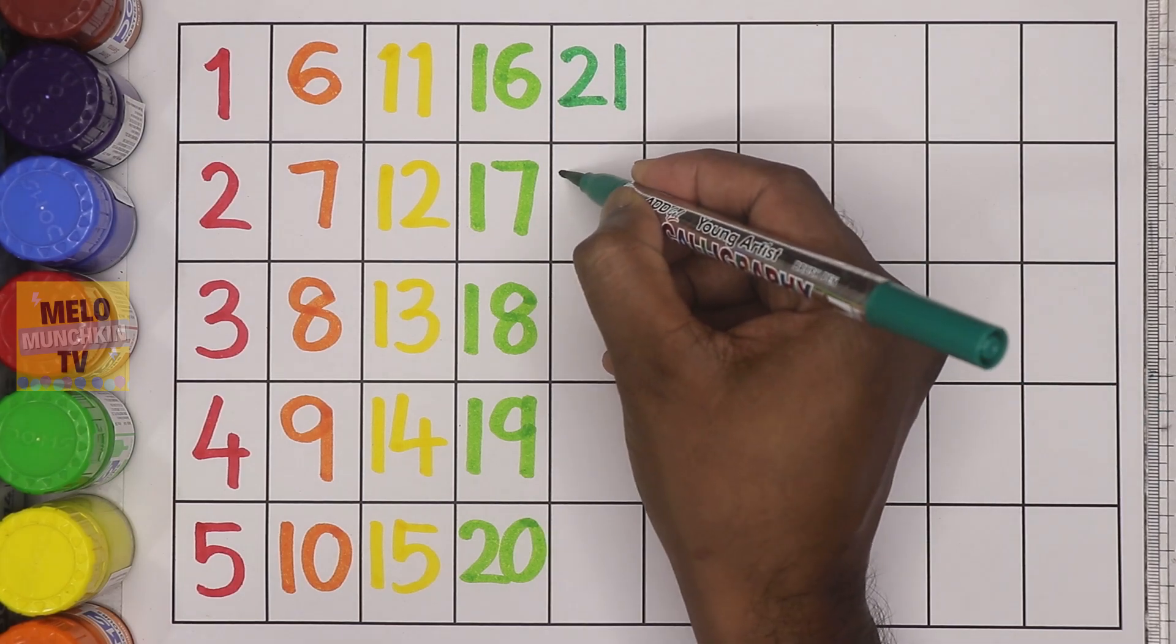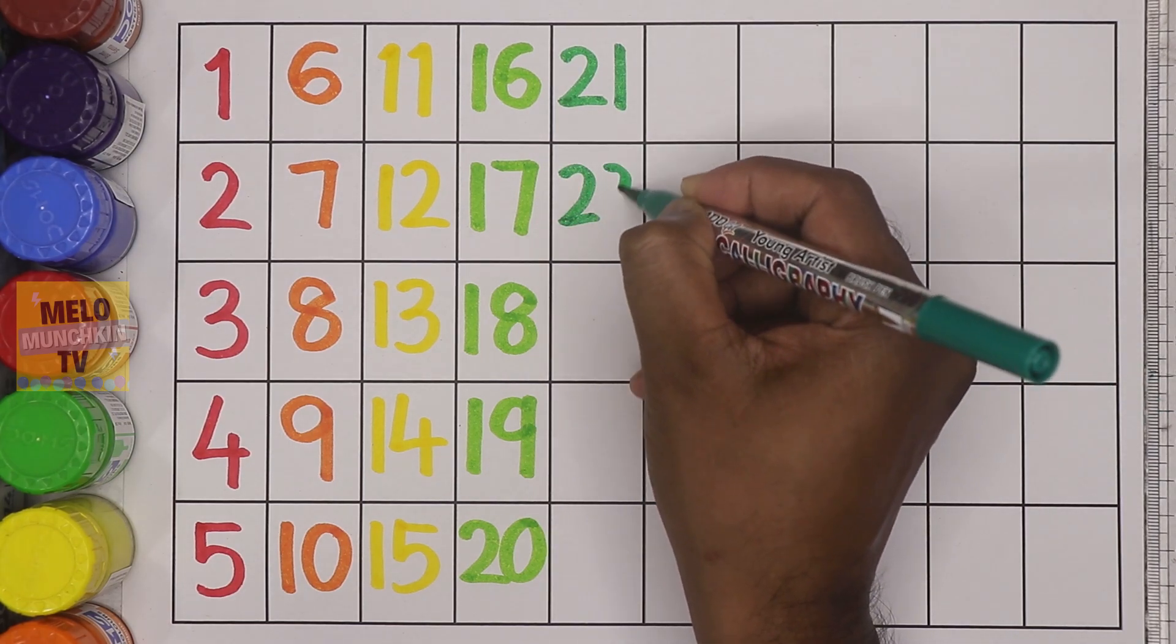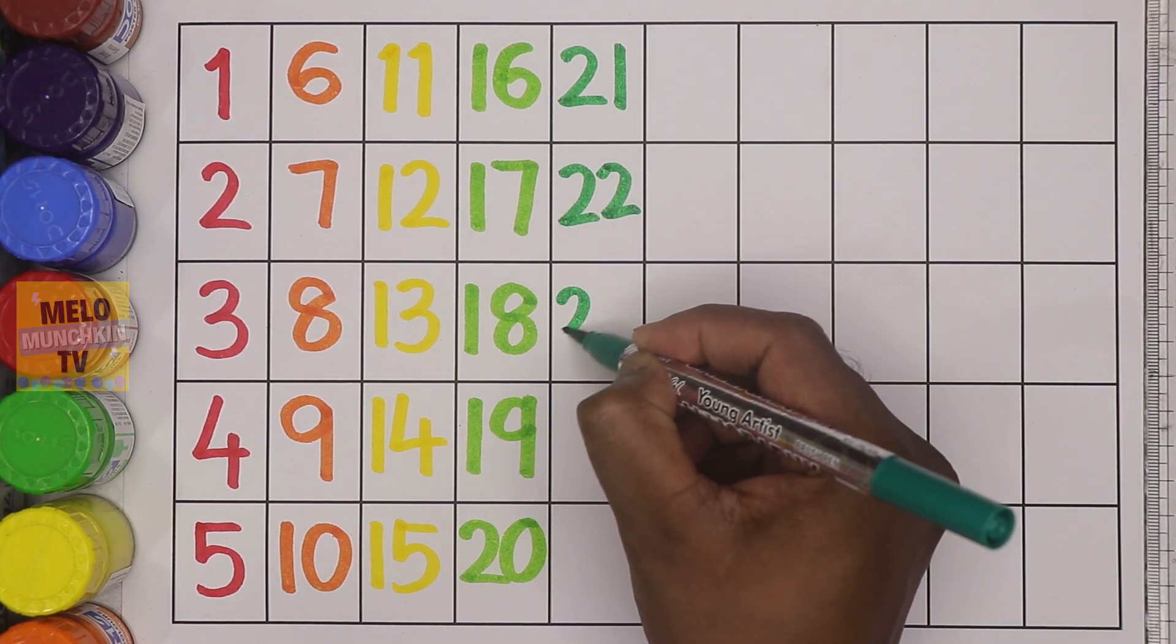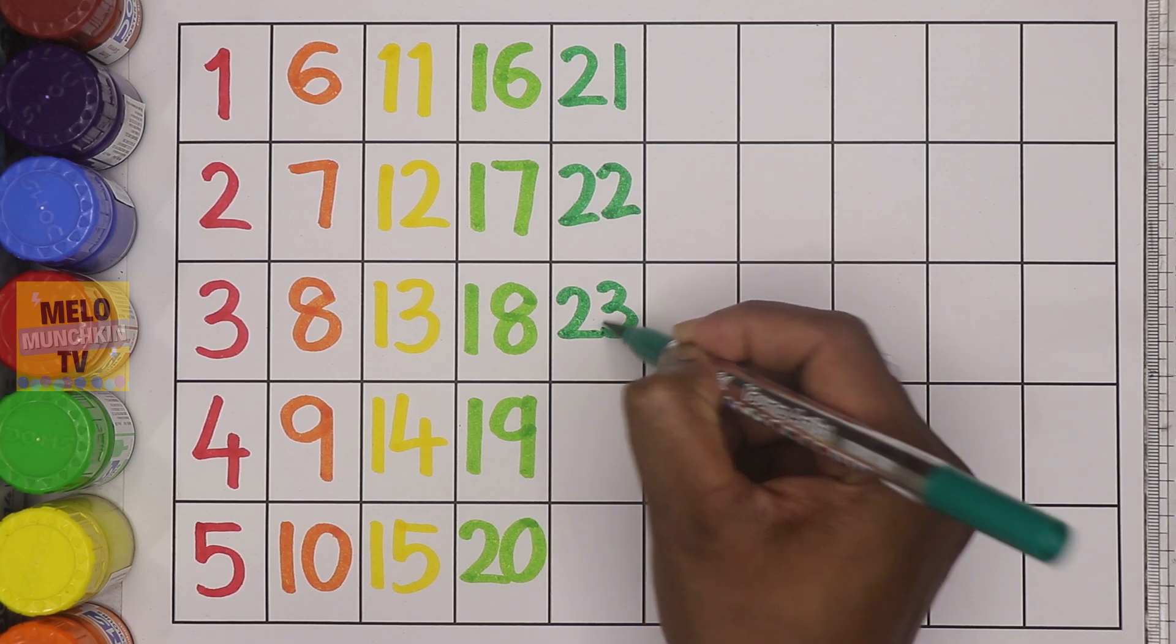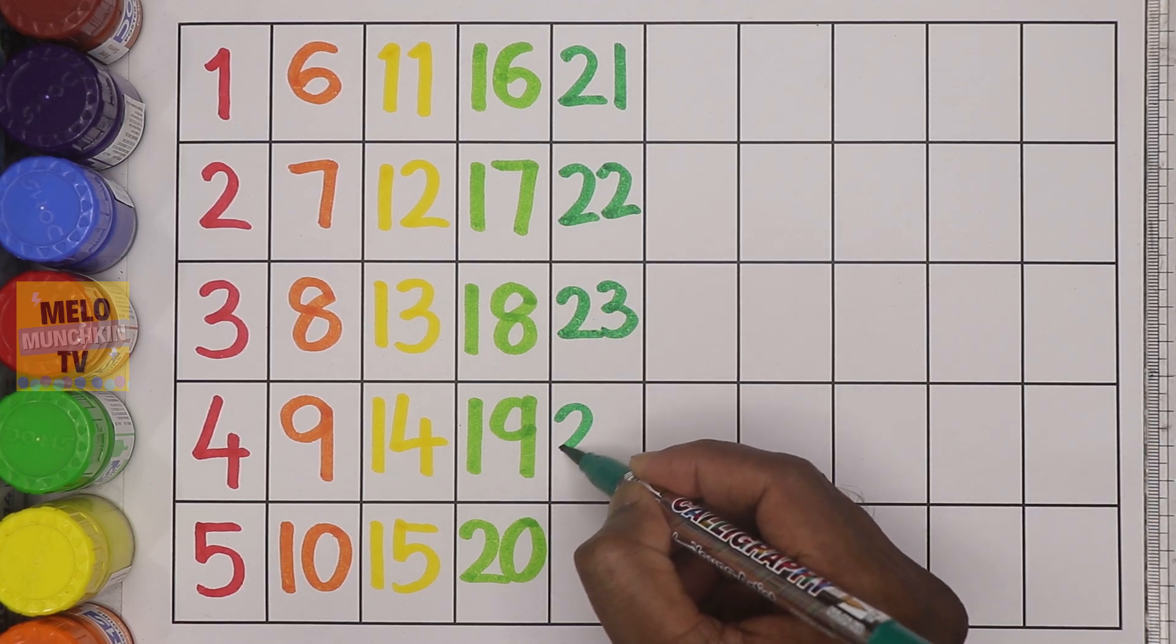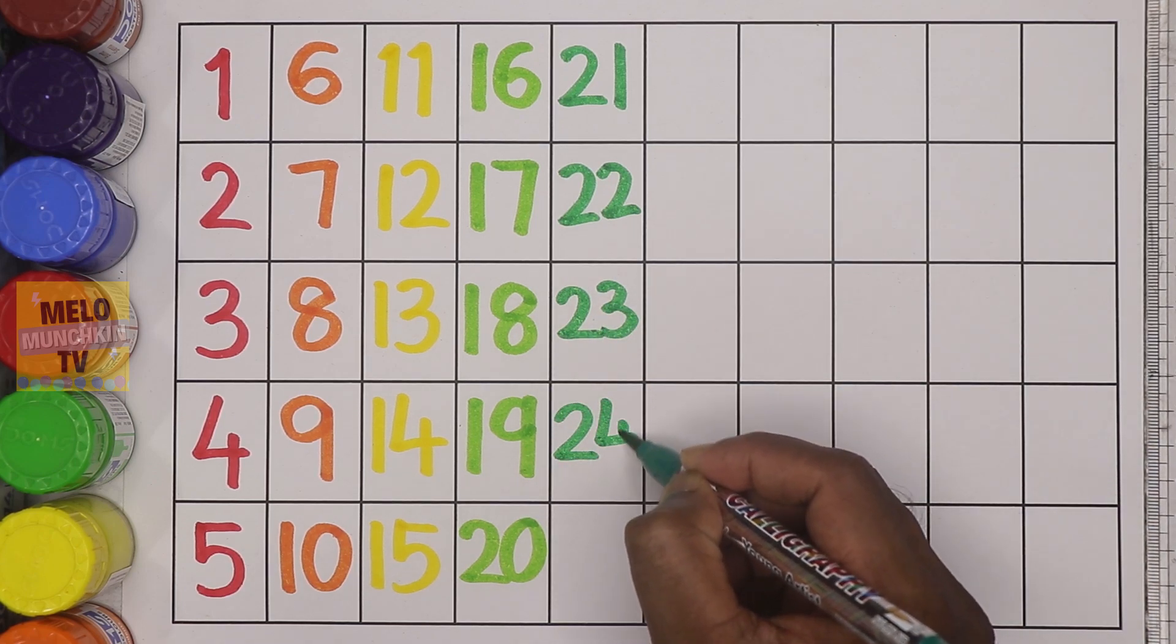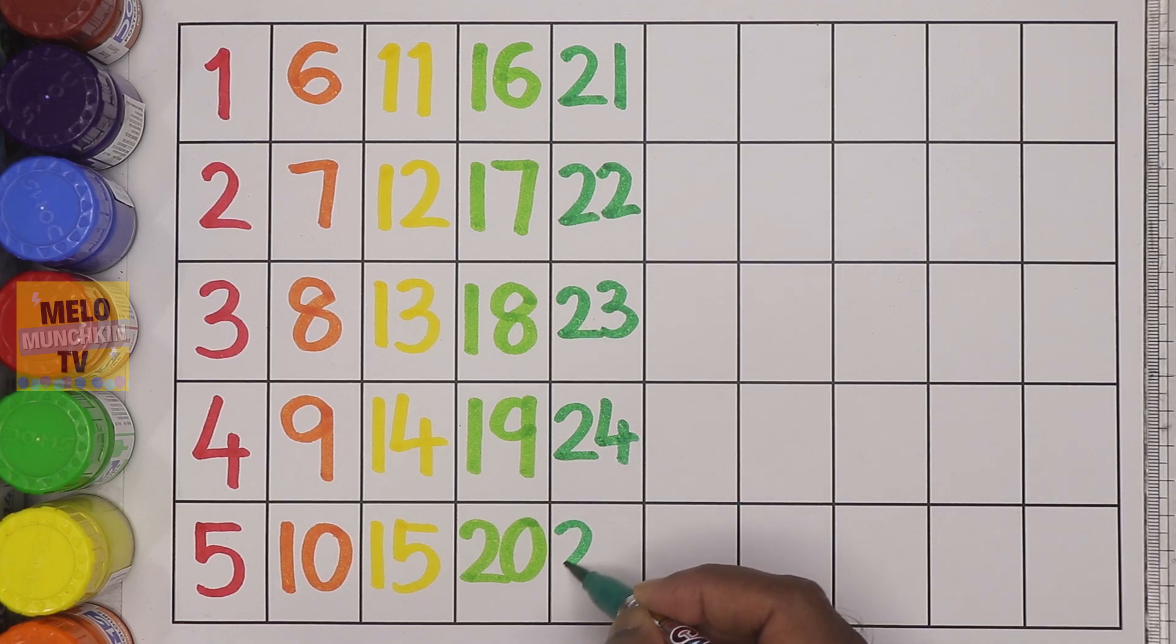twenty-one, twenty-two, twenty-three, twenty-four, twenty-five